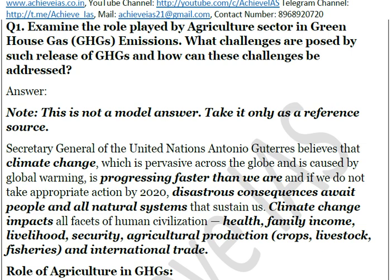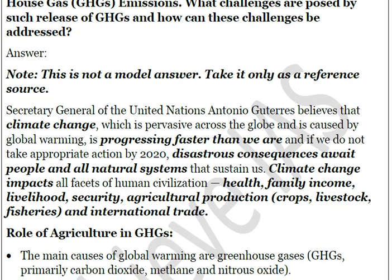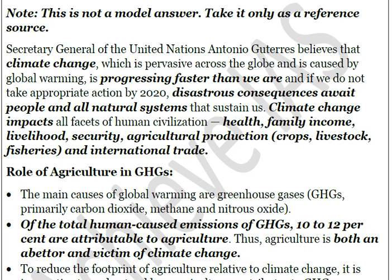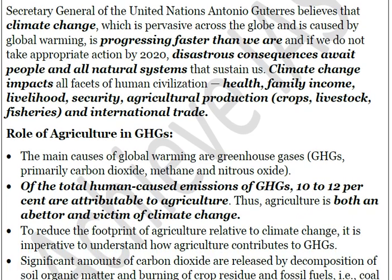When farmers use more fertilizers to compensate for reduced productivity, those fertilizers also contribute to greenhouse gas emissions and impact health through chemicals used in agriculture. Climate change also impacts internal security — if family income is affected, people lose their livelihoods and that creates internal problems. Multiple areas are affected: agriculture production, crops, livestock, fisheries, and international trade. This is the introduction, which you can reduce as per the demand of the question.